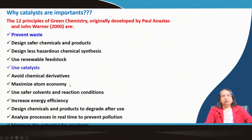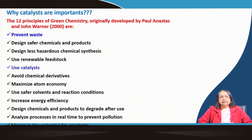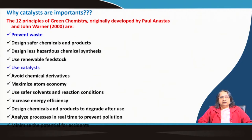Other green chemistry principles include: maximize atom economy, avoid chemical derivatives, use safer solvents and reaction conditions, increase energy efficiency, and design chemicals and products to degrade after use. Use of catalysts is also there in these principles. If you are research-minded and go to the journals, you will see there are many journals dedicated to catalysis — from ACS, from ELSEVIER, from RSC — just dedicated to catalyst or catalysis. This is really a very important field today.